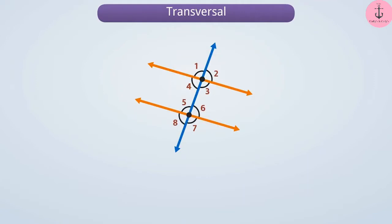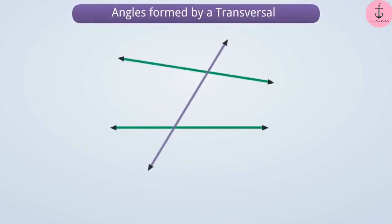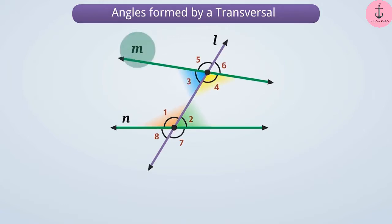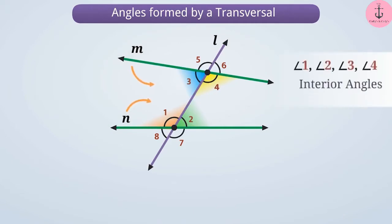Today we will understand the angles formed by a transversal. Line L is intersecting lines M and N at different points, which is why we call it a transversal. Angles 1, 2, 3, and 4 are in between lines M and N. All the angles formed in between two lines by a transversal are called interior angles.